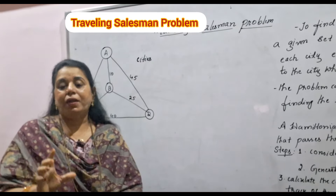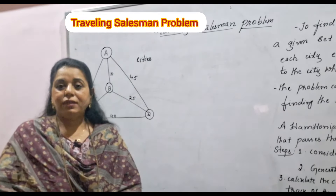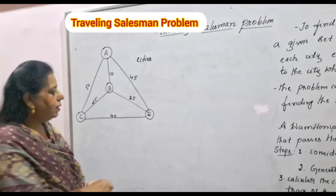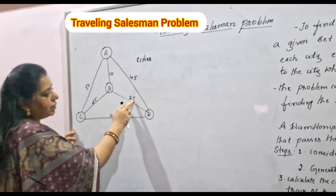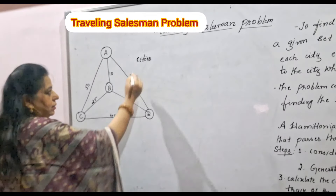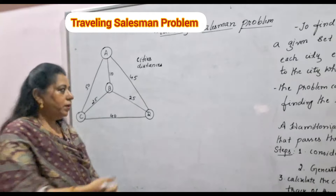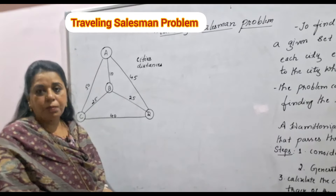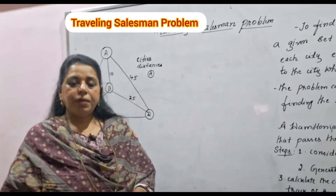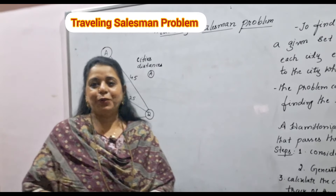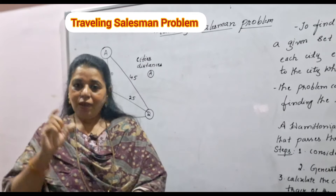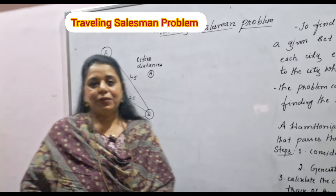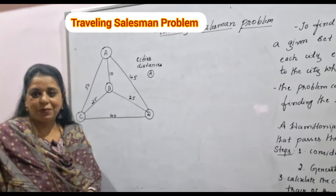We want to find which route this person can use to reach all cities with the least distance and return to the starting city. This is modeled by a weighted graph, where the edges have weights representing distances in kilometers. For the starting node, if it is not mentioned, you can take node A — following alphabetical order A, B, C, D. If cities are numbered, take node 1 as the starting node.